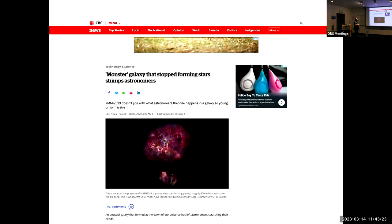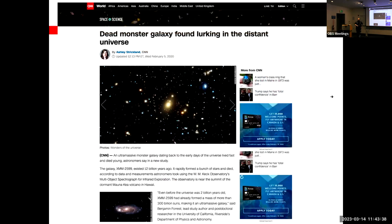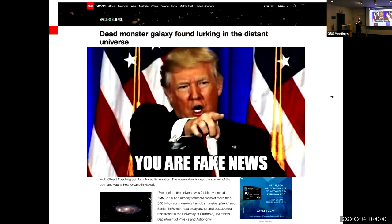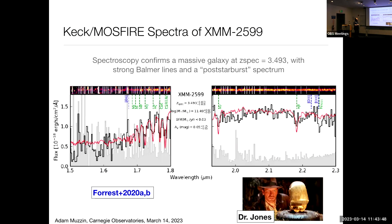We had a press release on this. I'm Canadian, so it was picked up by the CBC — my mom and dad were really proud. My American collaborators didn't care about the CBC, but CNN picked it up. Anyway, XMM2599 is not fake news. Here's the spectrum — beauty is in the eye of the beholder, but this is probably, at least before some of the James Webb observations, by far the best spectrum of a redshift 3.5 quiescent galaxy we've ever seen. About 10 hours on Keck MOSFIRE.